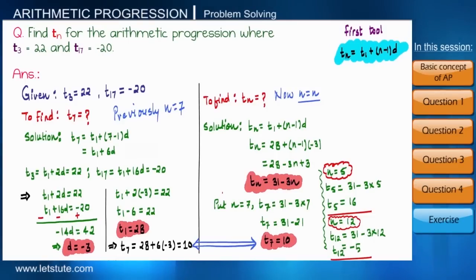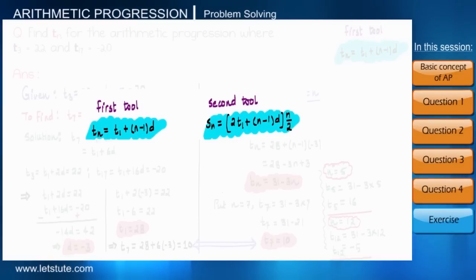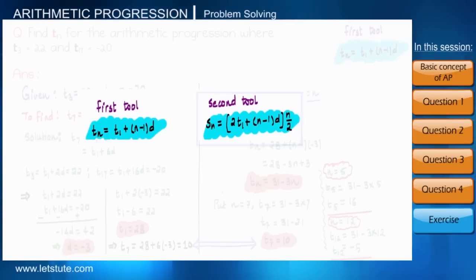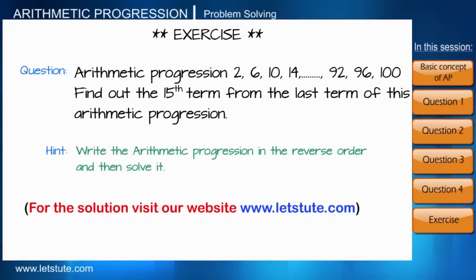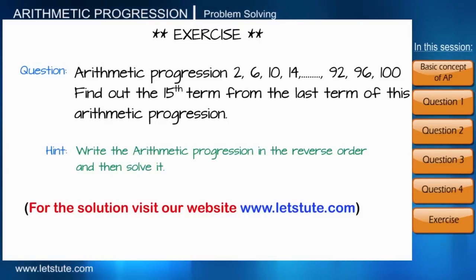By now you can easily identify the different parameters of any arithmetic progression and solve any related question. Next time we will solve questions based on the second formula. Here is a practice question: find the 15th term of an AP from the last term. Hint — write the AP in reversed order and then solve it.